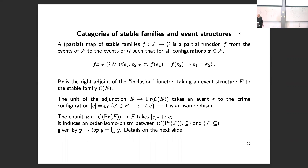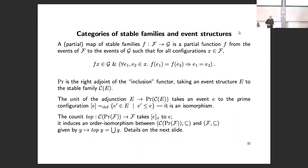You go to all this trouble, take your event structure, get a stable family out of it, recover the local minimal ways in which an event can occur, and you get back the same thing — the smallest configuration containing e — giving an isomorphism. It's really just renaming events by their downward closures. This adjunction is special: you can go away from event structures and come back to within isomorphism. These are sometimes called co-reflections.